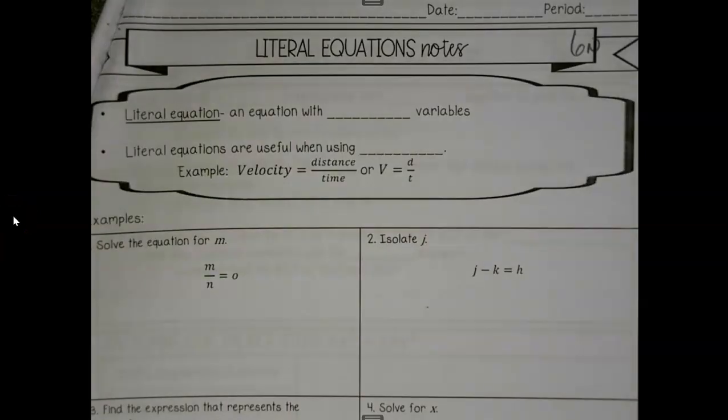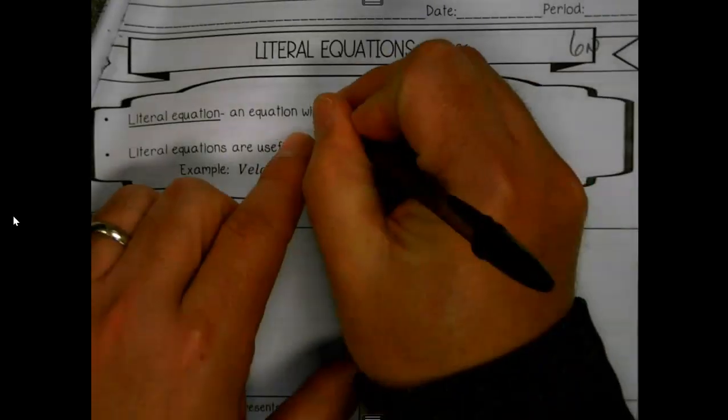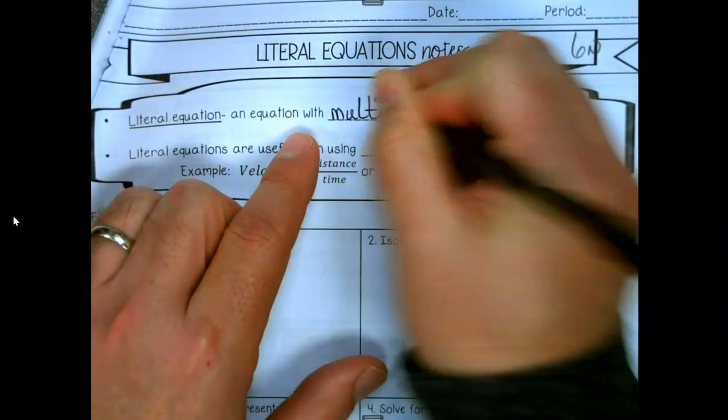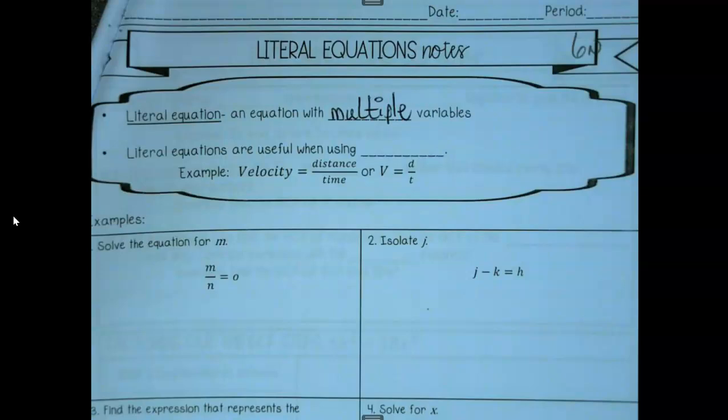Today we are going to deal with literal equations because I guess they said a bajillion variables would scare people too much. So, an equation with multiple variables.